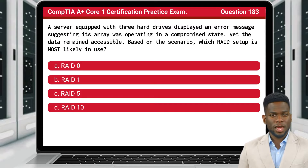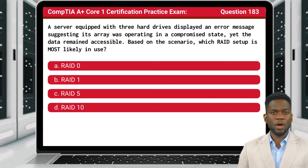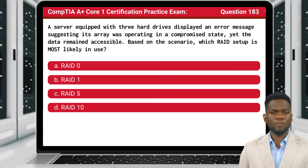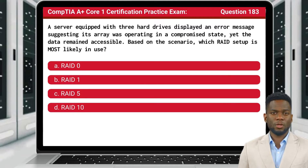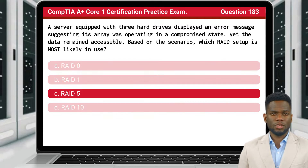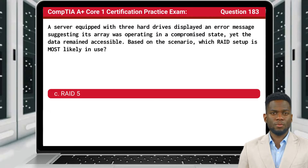Question 183. A server equipped with three hard drives displayed an error message suggesting its array was operating in a compromised state, yet the data remained accessible. Based on the scenario, which RAID setup is most likely in use? The answer is C, RAID 5.